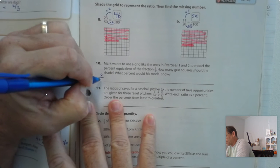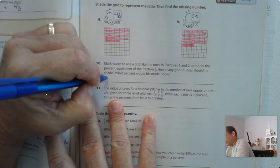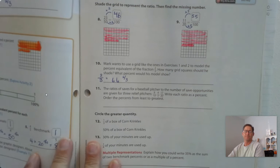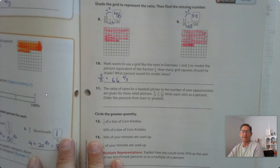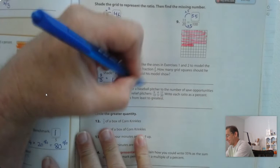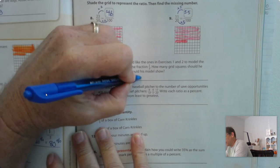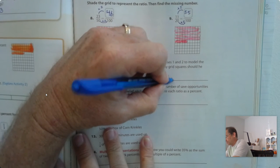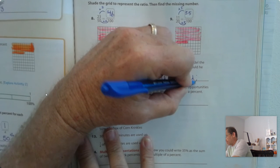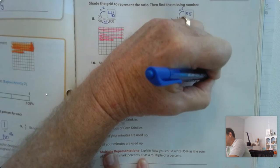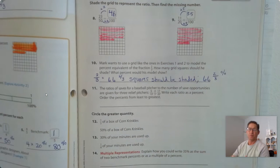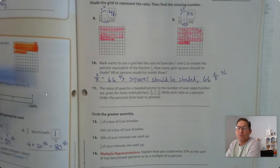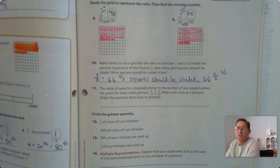Well, 2 thirds is a benchmark, and that is 66 and 2 thirds, if we converted it to out of 100. So he would shade 66 and 2 thirds squares. And so the percent is 66 and 2 thirds per 100. I'm sorry, 66 and 2 thirds percent, or 66 and 2 thirds squares per 100.